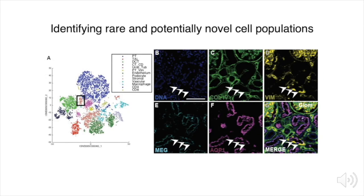We also discovered intriguing cell populations in reference kidneys, including a subpopulation of proximal tubular cells which co-expressed the intermediate filament protein Vimentin. These cells, shown in the black box on the t-SNE and highlighted with arrowheads in panels B through G, may represent injured or regenerating cells, an area worthy of further exploration.